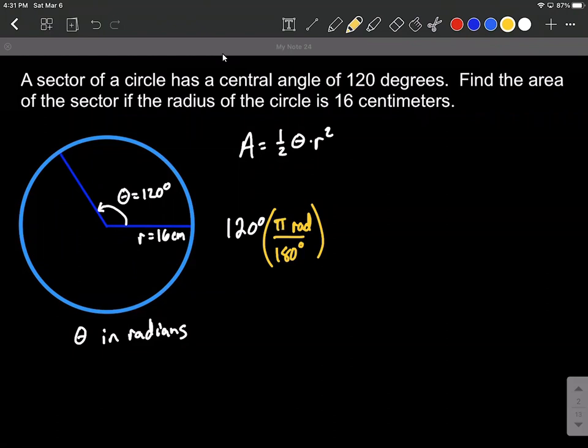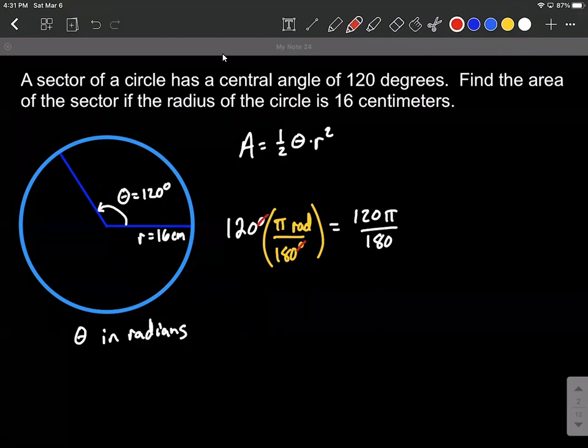So as we multiply these together, we're going to multiply numerators, 120 pi over 180, and now let's look at our units. So for our units, we had degrees in the numerator and degrees in the denominator, so those get to cancel out. We're left with radian measure.